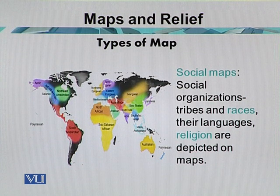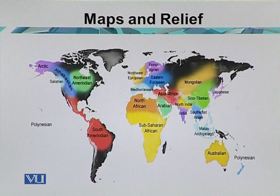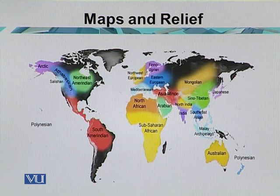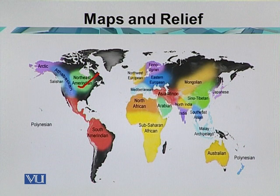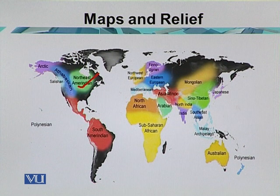Sometimes these maps are made to depict a certain religion, like Muslims being related to particular areas. The map shows the different cultures of the world. The northern part of Africa is covered with North African culture, central and south Africa with Sub-Saharan African culture, western Europe with Northwest European culture, and the central part of North America with North American culture. These represent the different tribes and small races of the world.